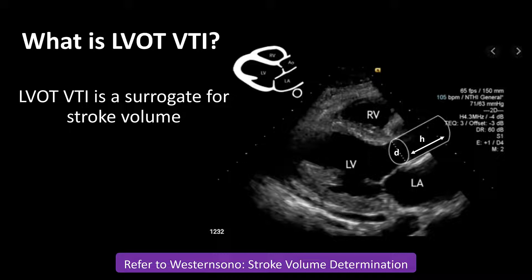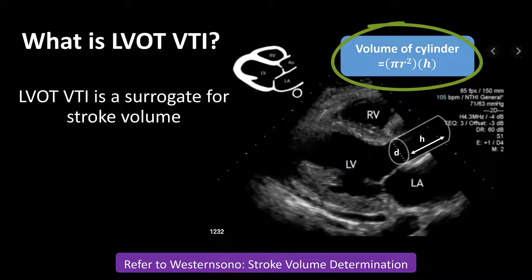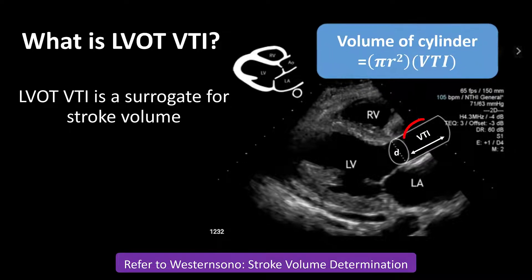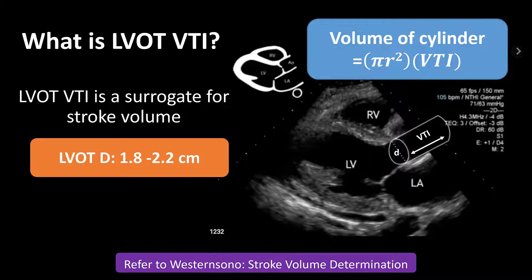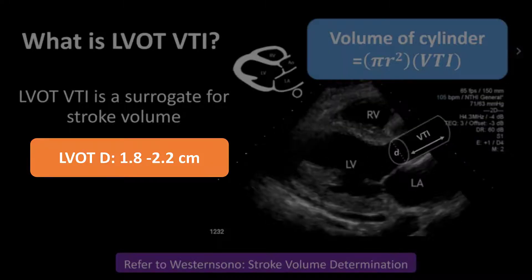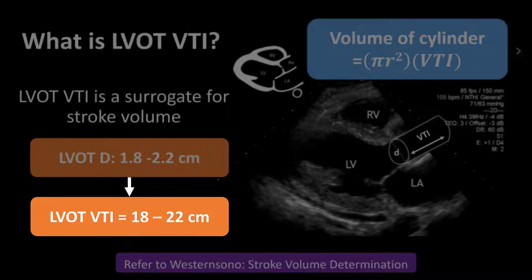The LVOT VTI is a surrogate for stroke volume. We assume the LVOT is shaped like a cylinder, and if we calculate the volume of that cylinder, we're able to determine what our stroke volume is. The height of that cylinder is actually our LVOT VTI. The diameter is a static measurement that does not change, and most people have an LVOT diameter anywhere from 1.8 to 2.2 centimeters. Therefore, a VTI of 18 to 22 centimeters corresponds to a normal stroke volume of around 60 cc in most patients.